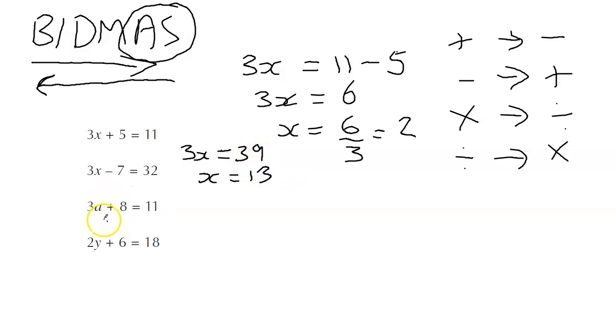We're going to do the opposite of the adding 8, which is taking away 8. So 3a equals 11 take away 8. Because when the 8 moves over, we do the opposite. 11 take away 8 is 3. And then we can divide by 3, doing the opposite of the times. So a equals this 3 divided by this 3. a equals 1.